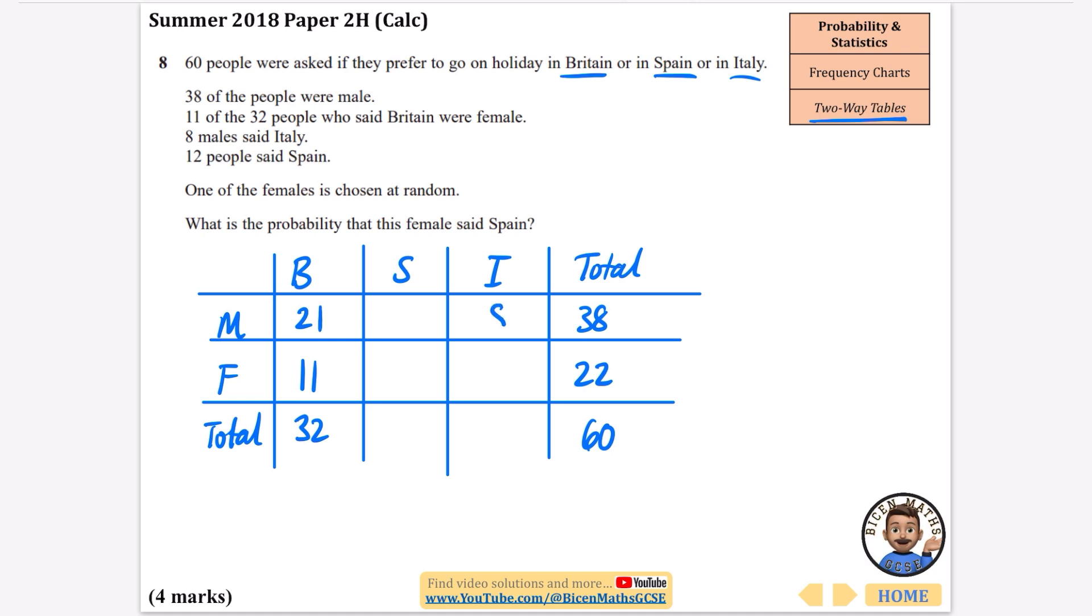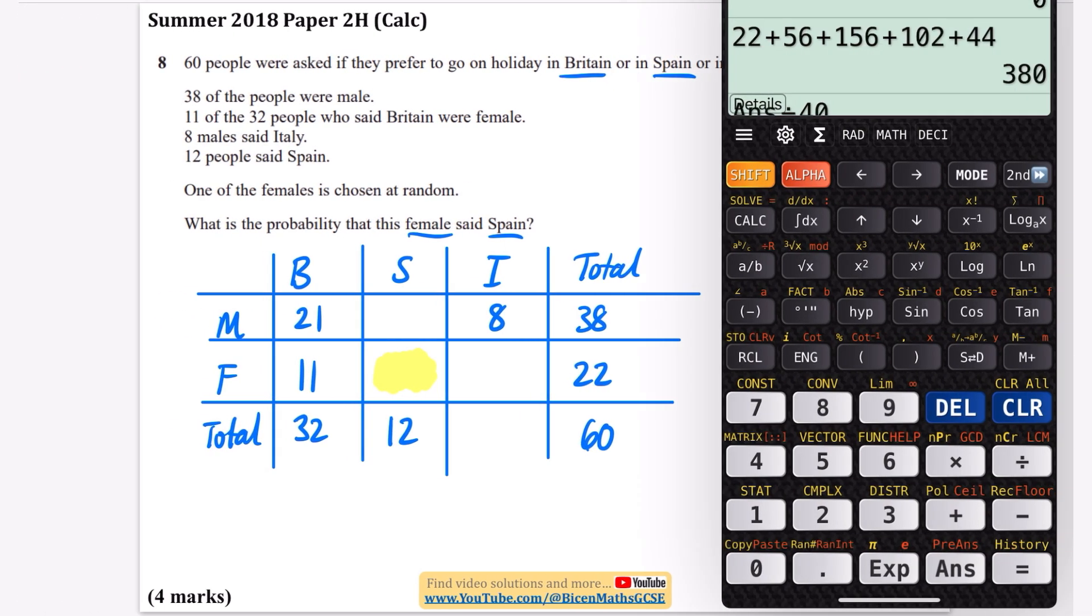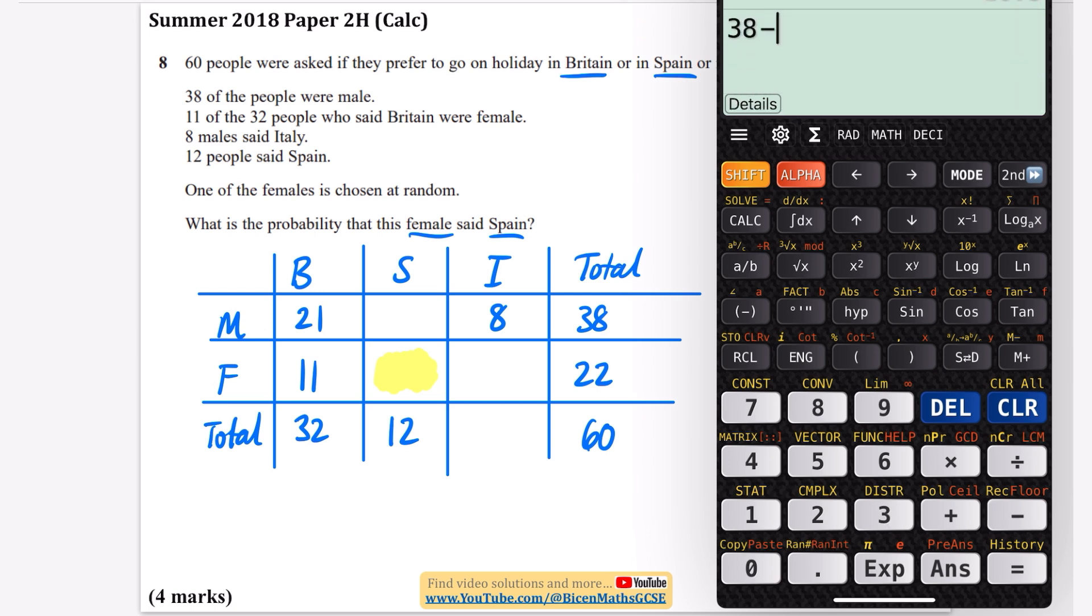8 males said Italy and 12 people said Spain, and we need to find the female said Spain so the one that I'm aiming for is I definitely want to know what this one here is. Okay well I'm going to figure out what the male Spain is by doing, just grab my calculator. I'll do 38 take away 8 take away 21, because if I do 38 take away 8 take away 21 I'll find that there are nine people here, so what I need to find that missing part is it's just going to be three.